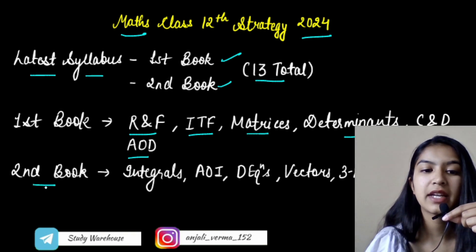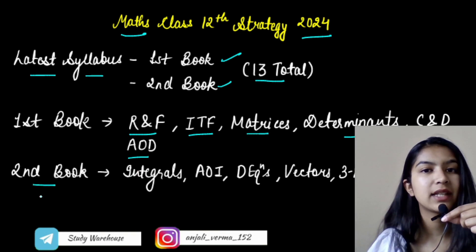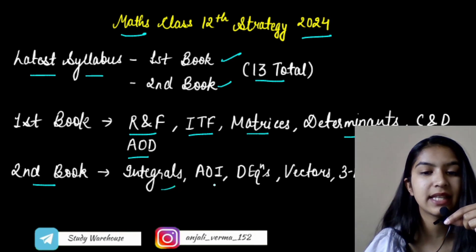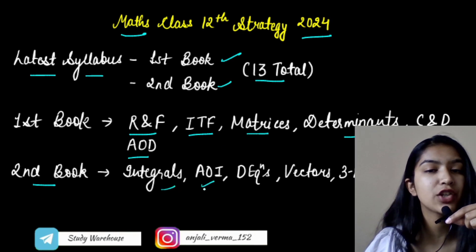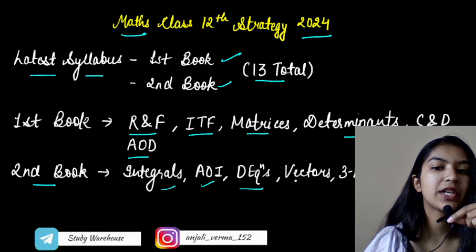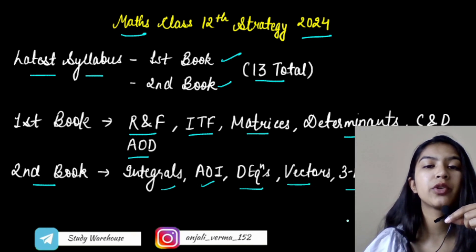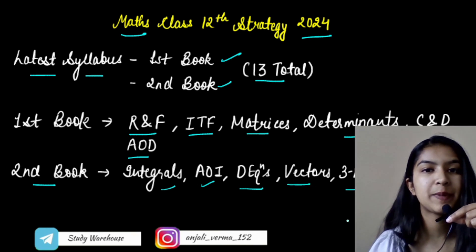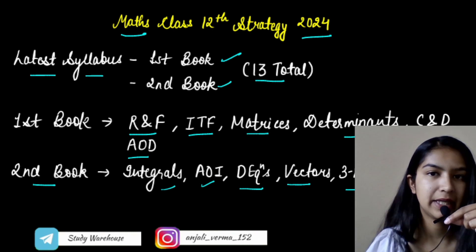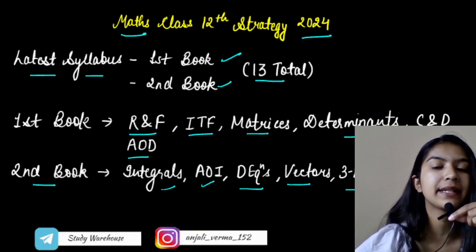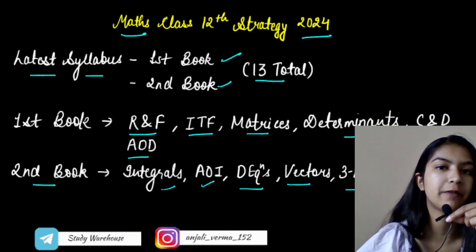Now if we talk about the second book, the chapters are a little more important. We have Integrals, Application of Integrals, Differential Equations, Vectors, 3D, and Linear Programming problems. And we have Probability — so we have total 7 chapters in the second book and 6 in the first book, making 13 chapters total.